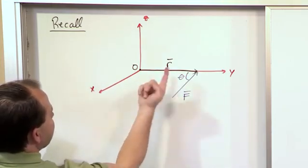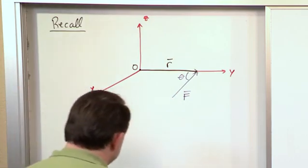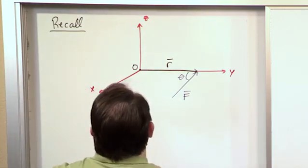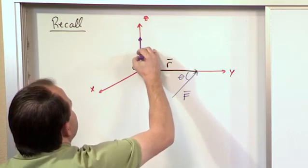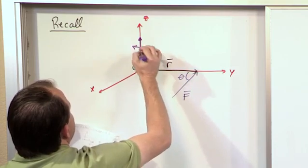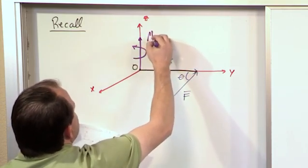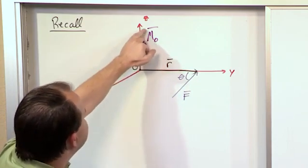From the right-hand rule, the moment is oriented straight up. So we typically write the moment vector oriented up like this, spinning in this direction, and we call that M₀ or M sub o, and it's a vector as well.